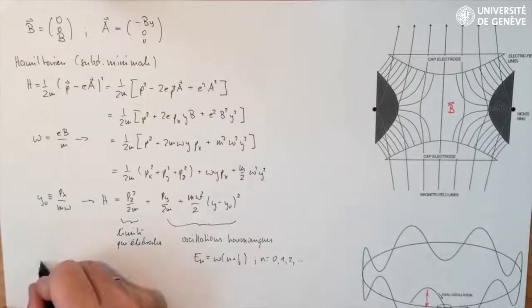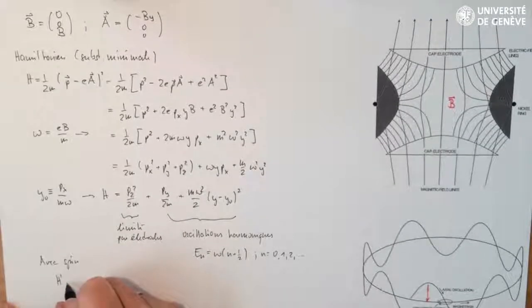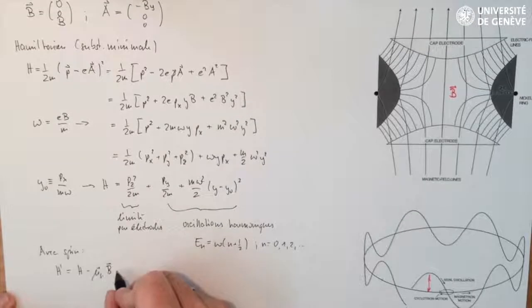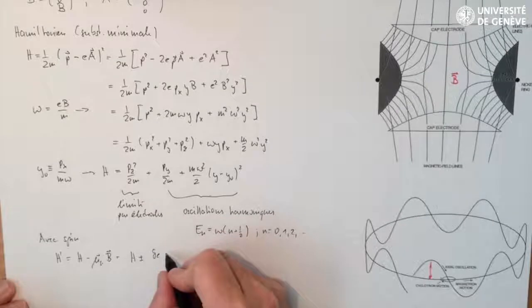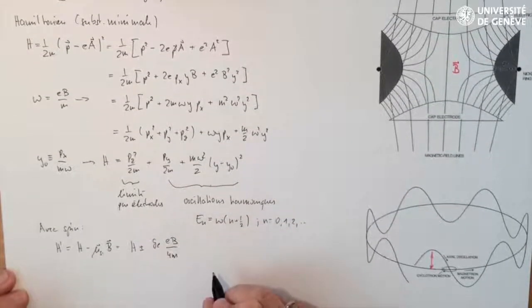If we now take into account the spin of the electron, the Hamiltonian acquires a term mu_s times B where mu_s is the magnetic moment of the electron and B is the magnetic field vector. So this gives an additional splitting by plus or minus g_e times eB over 4m.